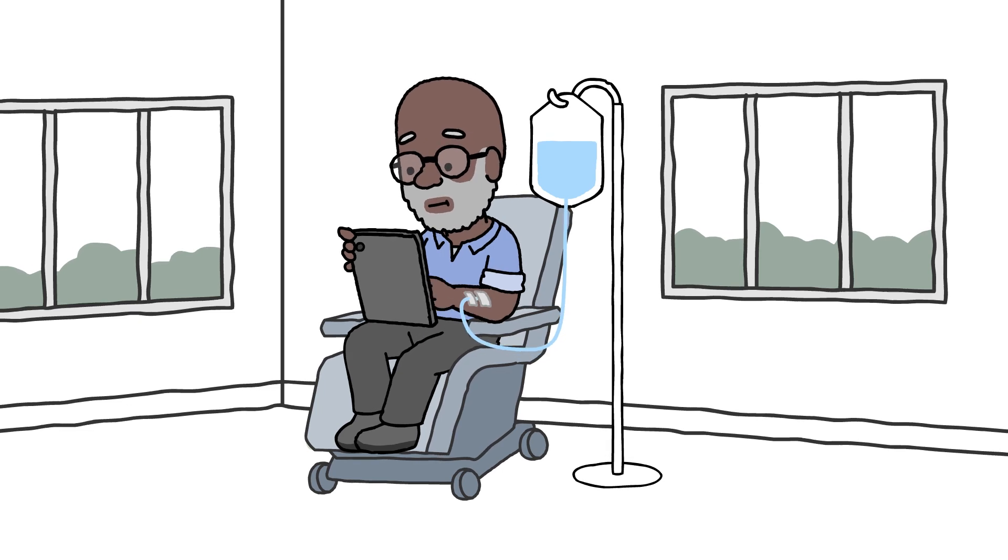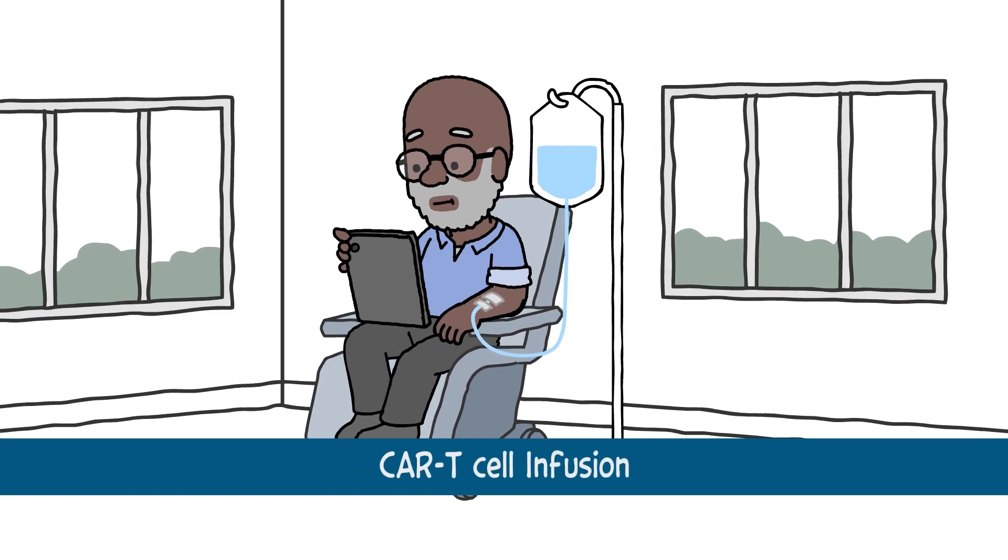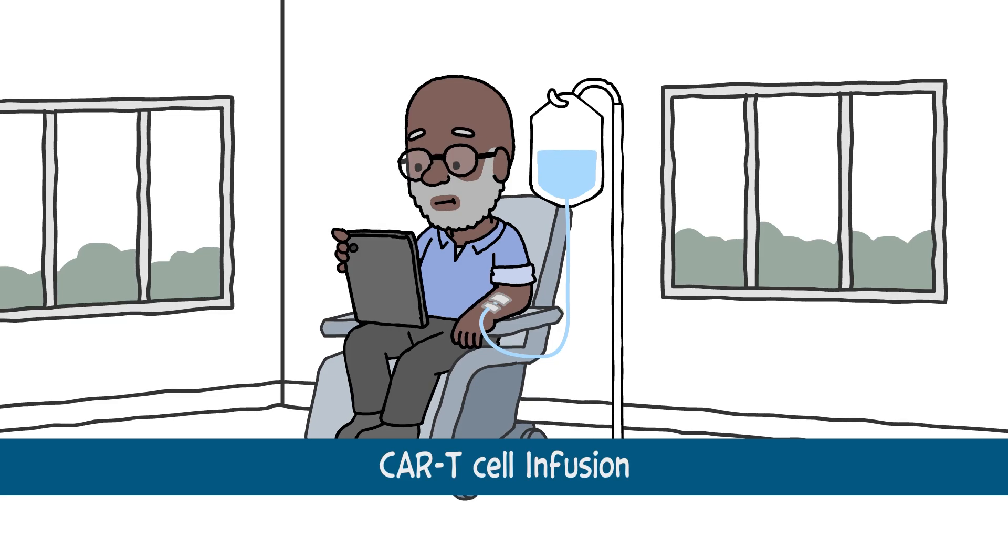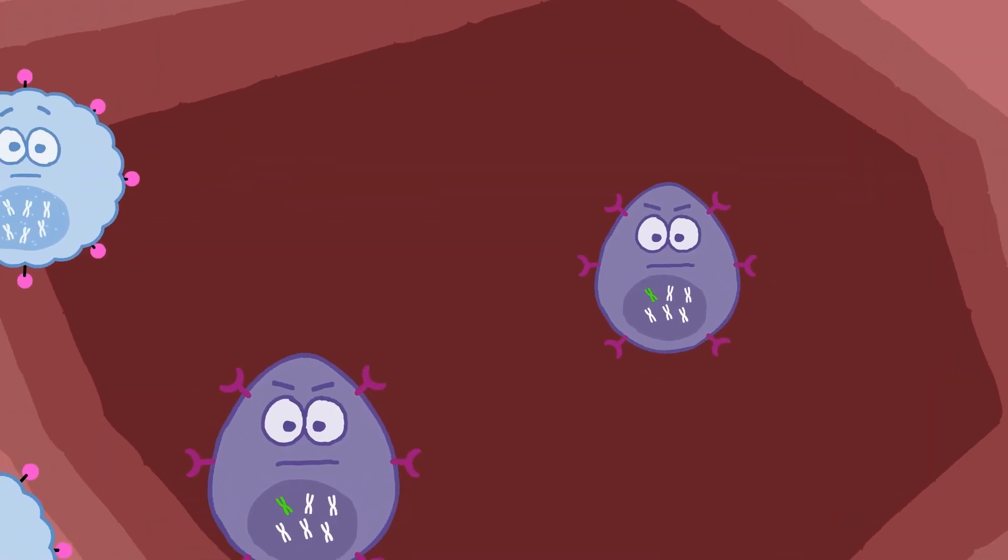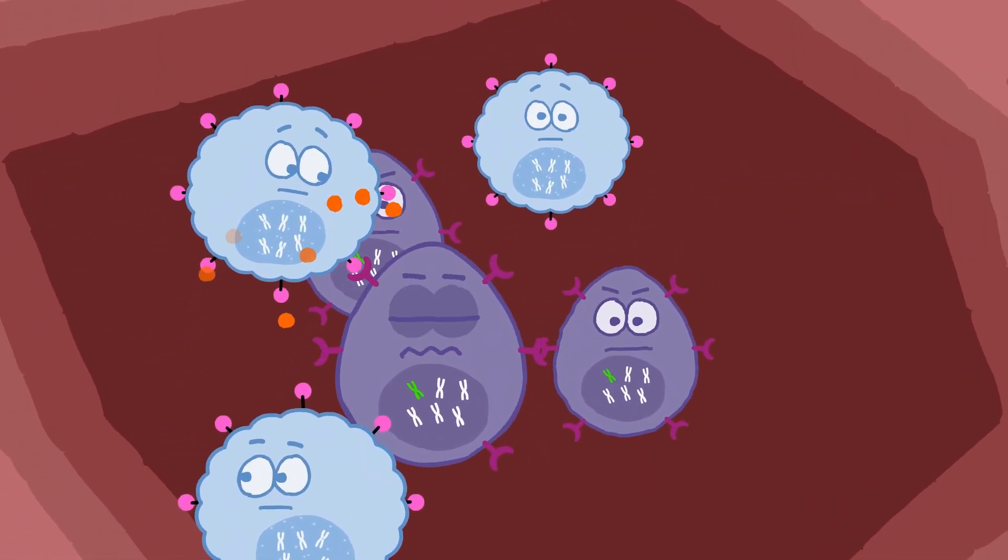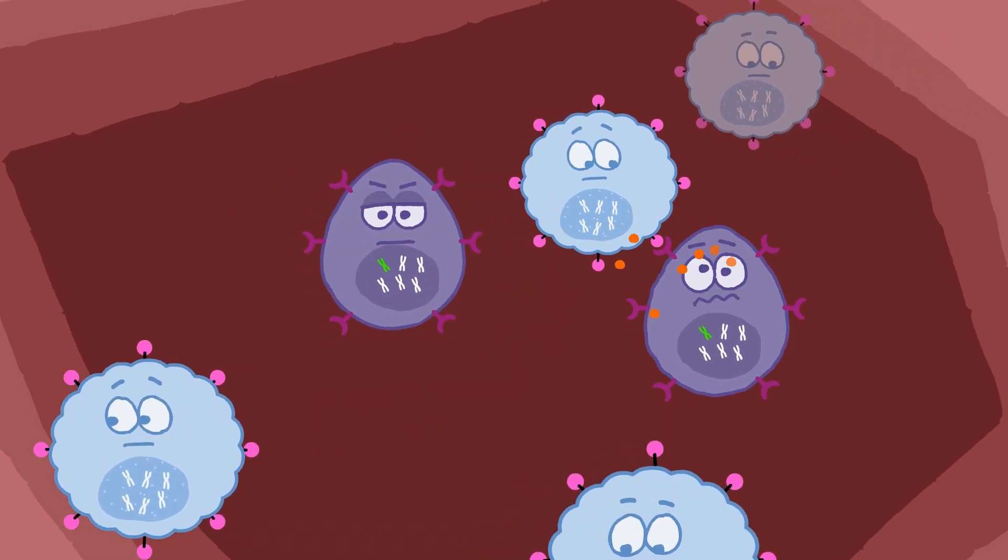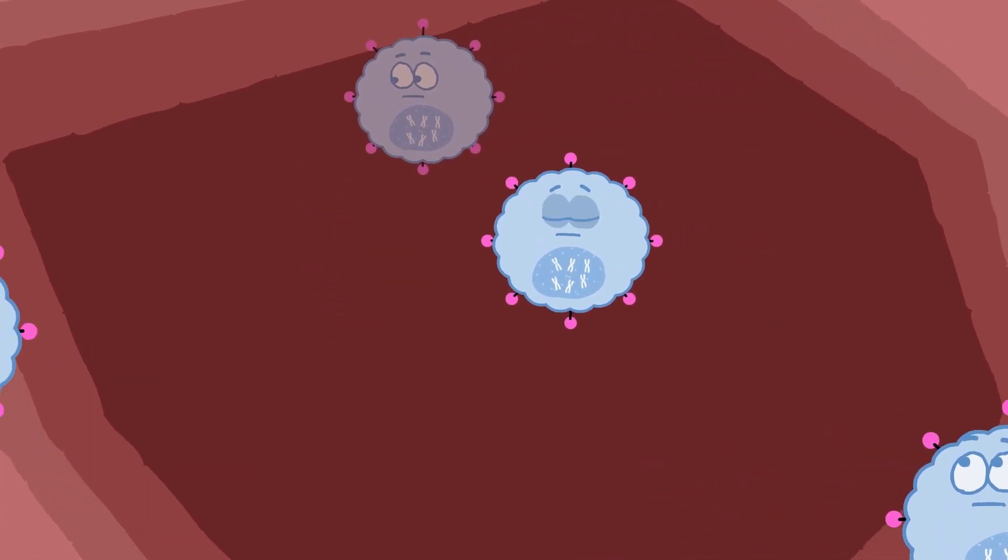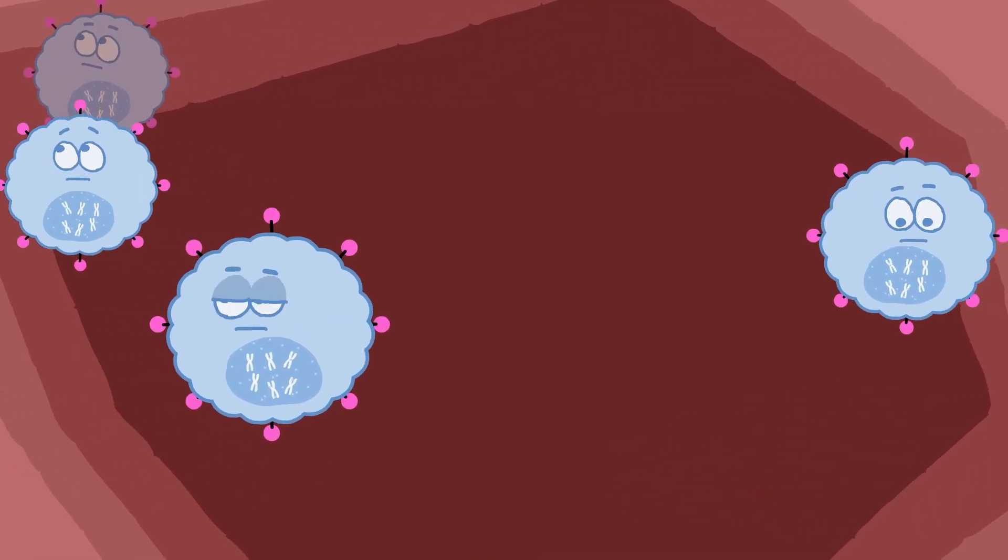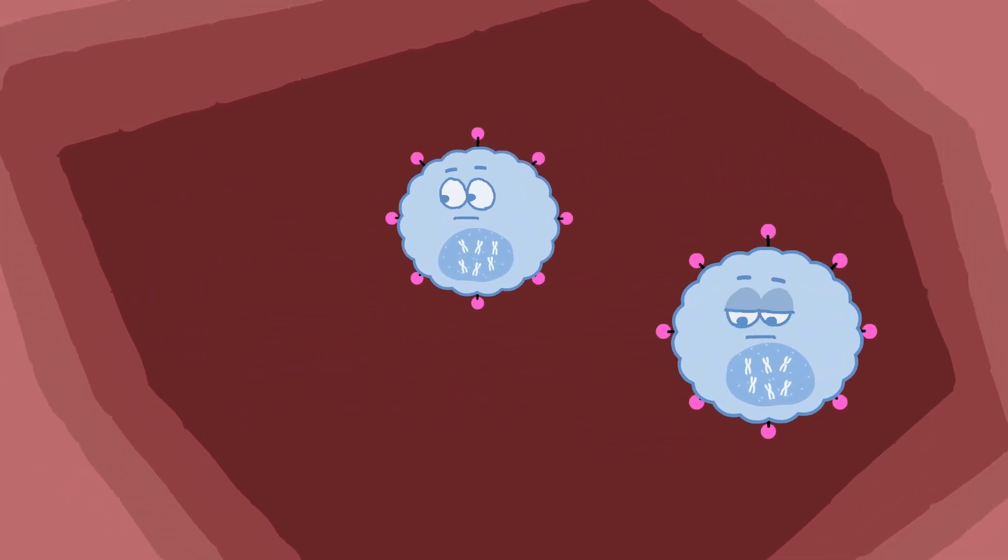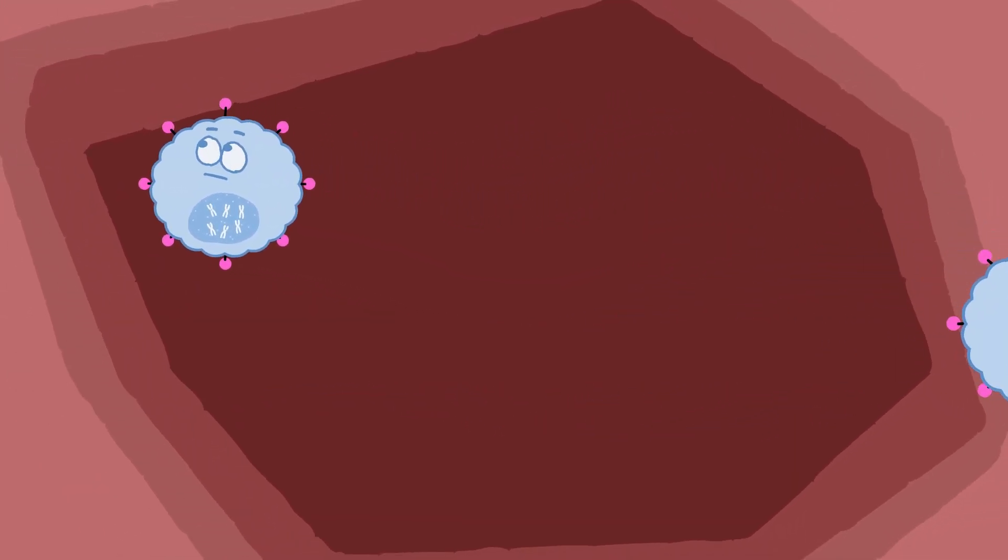Two to four weeks after leukapheresis, the patient receives the CAR T-cells through an IV. Once in the body, the reprogrammed T-cells can now locate and bind to the cancer cells to destroy them. The CAR T-cells then remain in the body for a period of months to continue to watch for any new cancer cells.